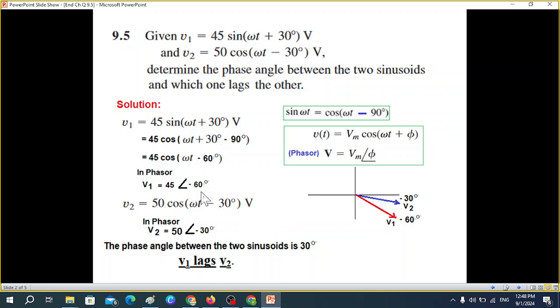Similarly, V2 is magnitude 50 angle minus 30°. In phasor form, it's easy to see the angle difference is minus 30 to minus 60, which is 30 degrees. To determine lag or lead, we look at the anti-clockwise direction. The blue signal leads, the red signal is behind so it lags. Therefore v1 lags v2, same answer.